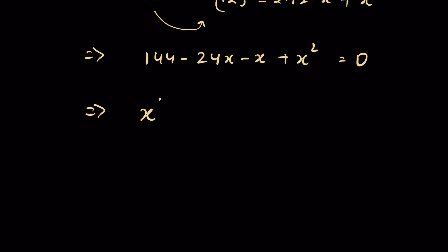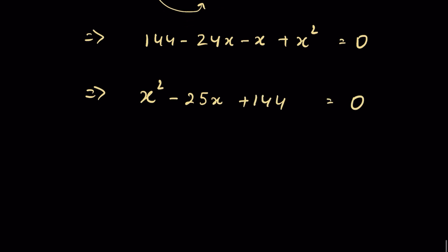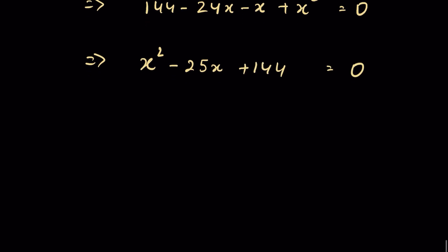Rearranging: x² minus 25x plus 144 equals 0. This is a quadratic equation, and we can find the roots for x using the quadratic formula: x equals minus b plus or minus the square root of (b² minus 4ac), all upon 2a.